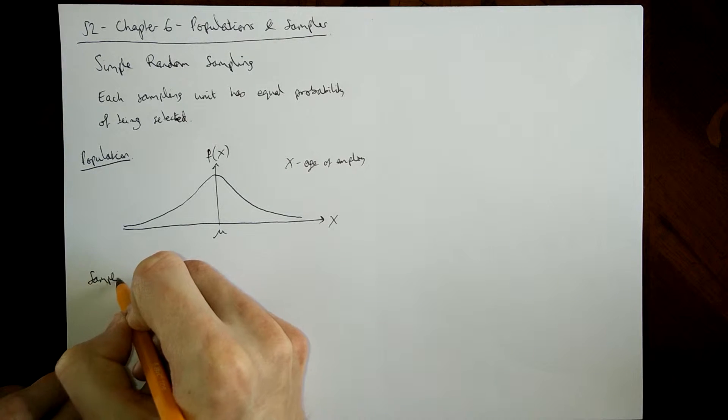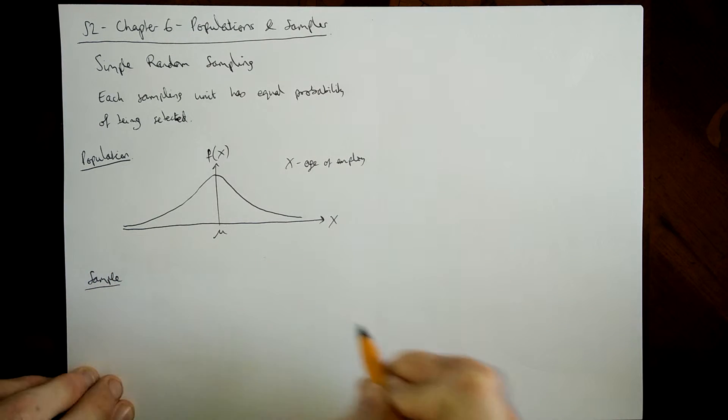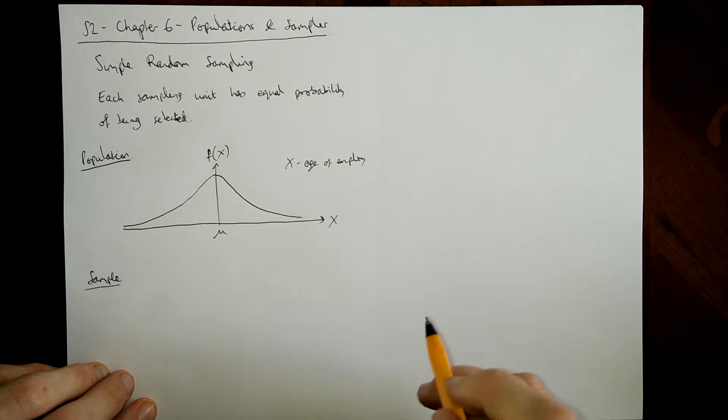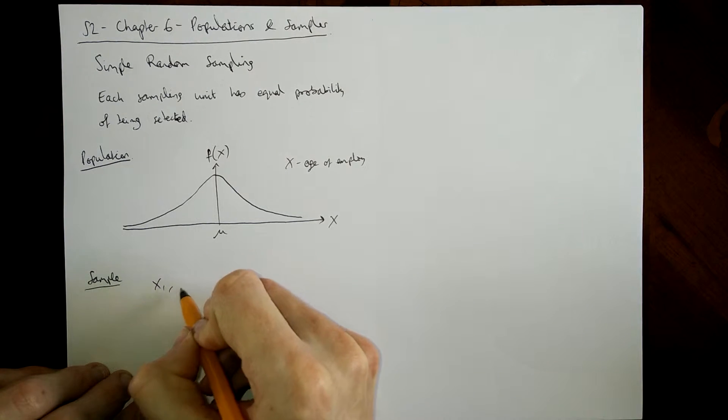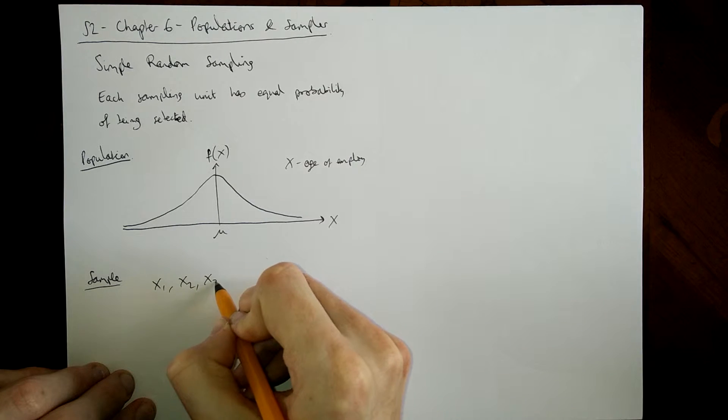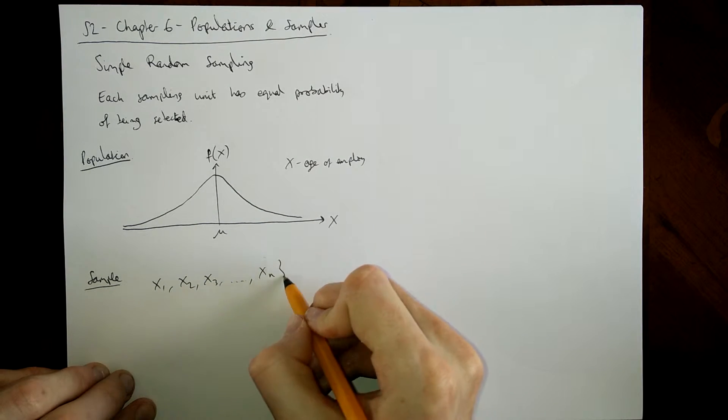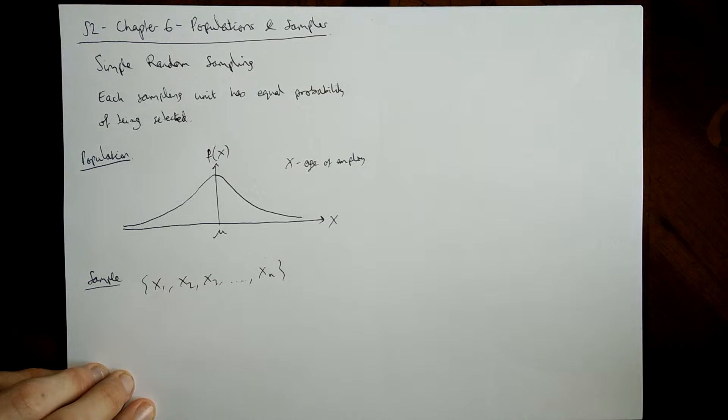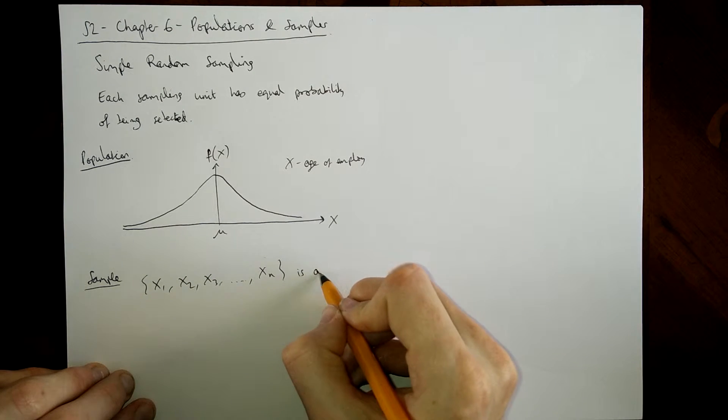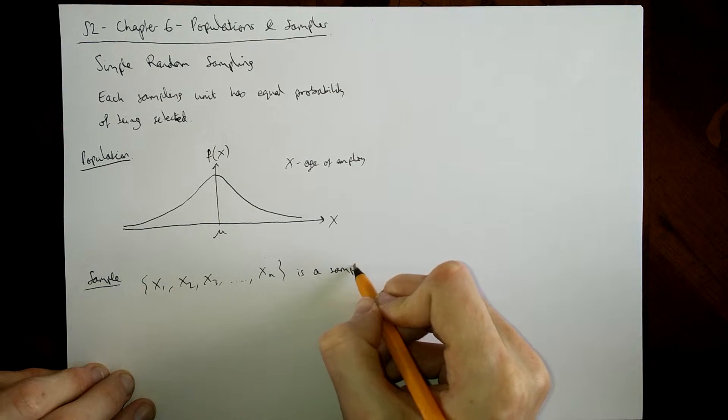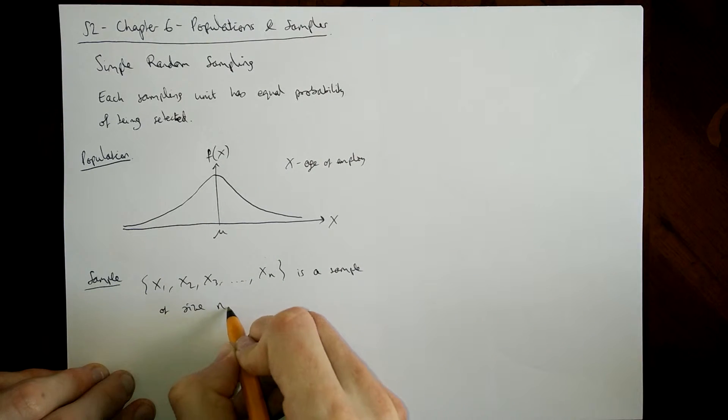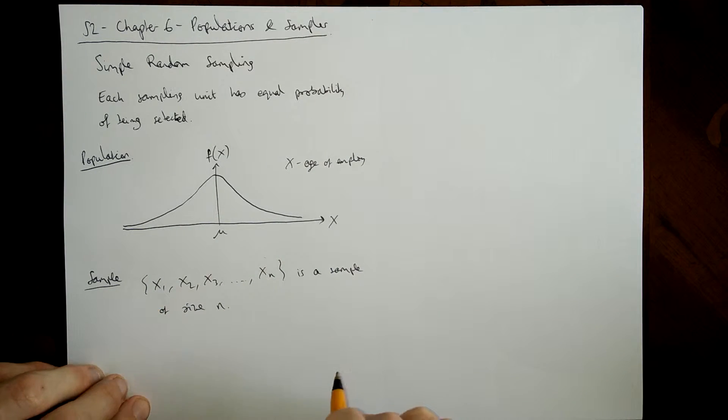A sample then would be a list of different ages. So you go and you take the people on your list of randomly generated people and you find the age of the first person, the age of the second person, the age of the third person and keep going until you get to the nth person. Maybe it's a hundred people, maybe it's a thousand people. I don't know how big your sample is going to be. This is a sample of size n.